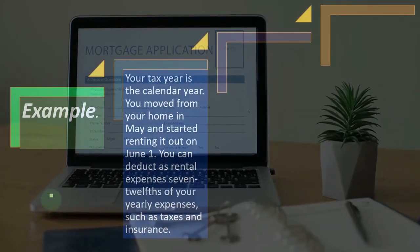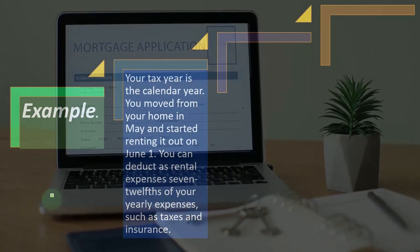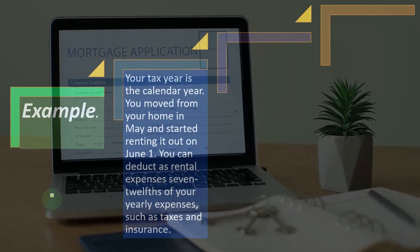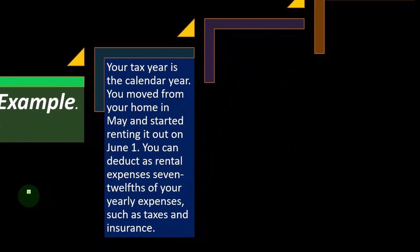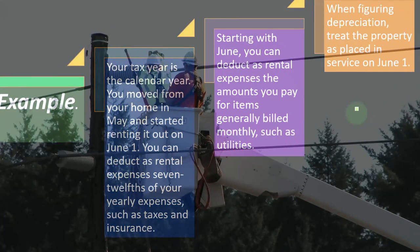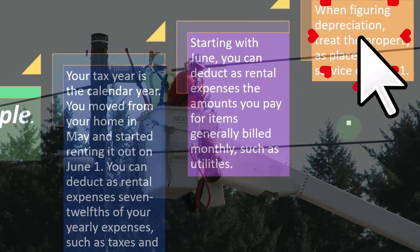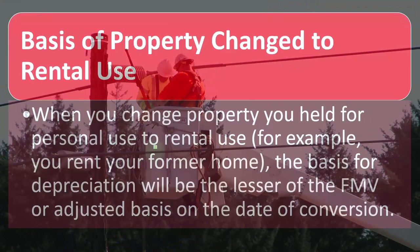Example: your tax year is the calendar year. You moved from your home in May and started renting it out on June 1st. You can deduct as rental expenses 7/12 of your yearly expenses such as taxes and insurance — that's the ratio of 7 over 12 months, the portion of the year you rented it. Starting with June, you can deduct amounts you pay for items generally billed monthly such as utilities. When figuring depreciation, treat the property as placed in service on June 1st.